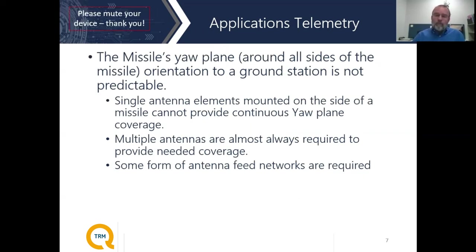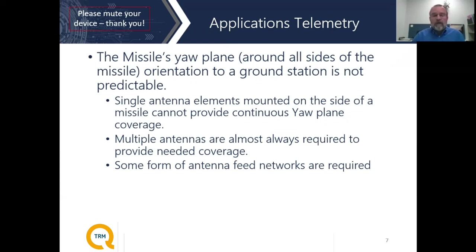The reason why we need parts — power dividers and such — for missile telemetry is because the missile operates in a yaw plane. This is specifically about a ballistic missile: the orientation of the missile to the ground station is not always predictable. Since the missile is very often rotating in the yaw plane as it flies, you need good coverage in that plane — meaning out to the side of the missile. A single antenna element really only looks in the direction it faces, so to cover a full 360-degree circle, you typically have to put at least two antennas on a missile, one on either side.